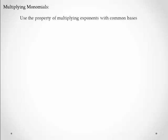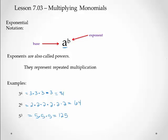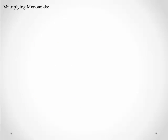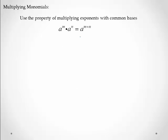When we multiply monomials, we use the property of multiplying exponents with common bases. So what that means—let's go back real quick—this part, the base, will match, and that has to happen in order to multiply the exponents. So if I have a to the m times a to the n, what I do is I add the exponents.